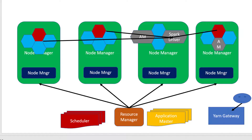The data transfer between the Spark driver and the worker or the task will happen through the Spark context. The same way a Spark application runs within YARN, we can have other distributed applications as well — it could be a MapReduce application or other graph processing applications.